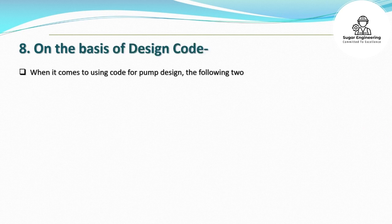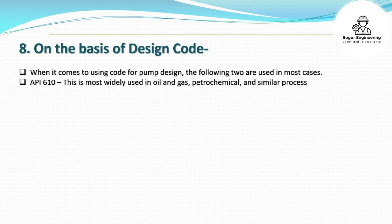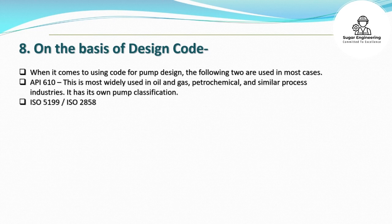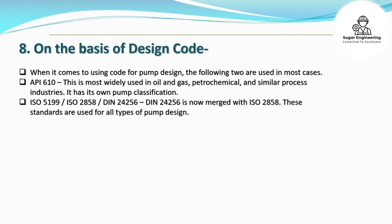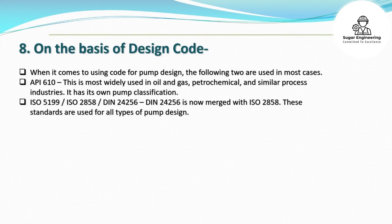On the basis of design code: when it comes to using a code for pump design, the following two are used in most cases. API 610 — this is most widely used in oil and gas, petrochemical, and similar process industries, and has its own pump classification. ISO 5199 / ISO 2858 / DIN 24256 — DIN 24256 is now merged with ISO 2858. These standards are used for all types of pump design.